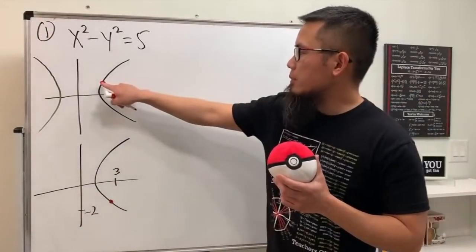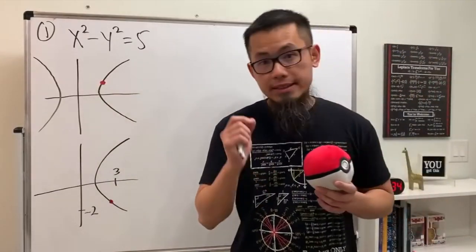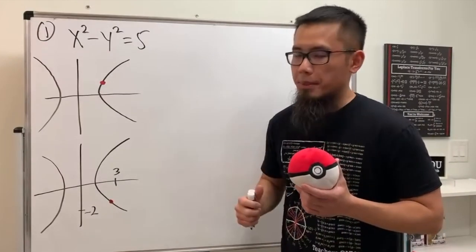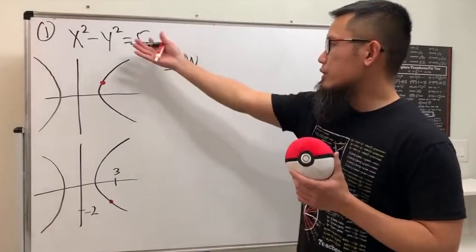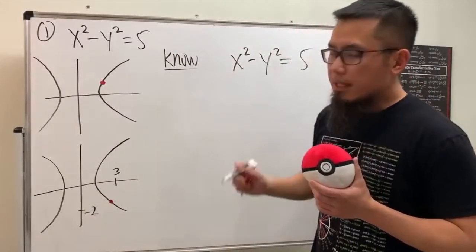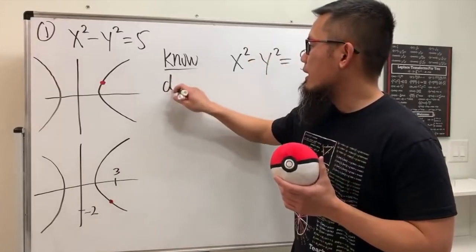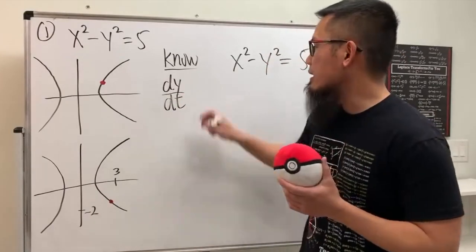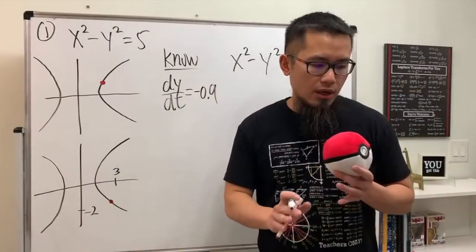The particle is moving and it's going to move from one position to another. We know because it says the y-coordinate is decreasing, so the point is moving down — that's why the second picture looks like this. There are two important words for related rates: what we know and what we want. We know dy/dt equals negative 0.9, because it's decreasing at 0.9 centimeters per second.